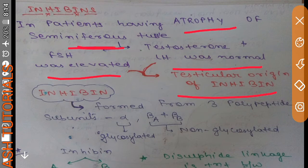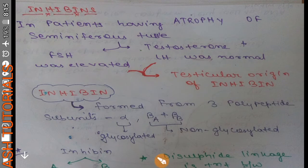There must be something which was being released from the seminiferous tubules which was inhibiting FSH. Because of the atrophy, there was no release of that substance, so there was no inhibition of FSH, and because of that reason FSH was elevated. So this was the basic idea behind the discovery of inhibin.